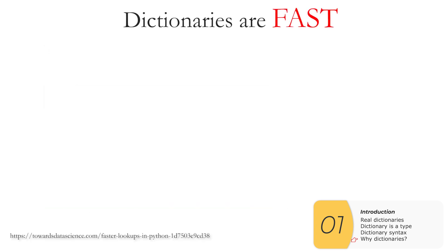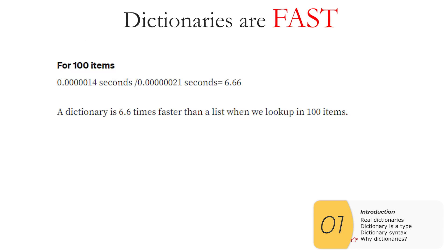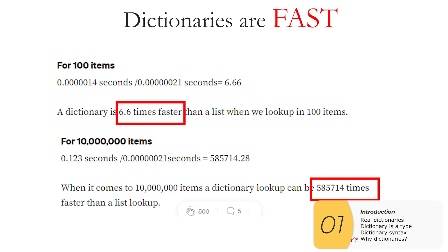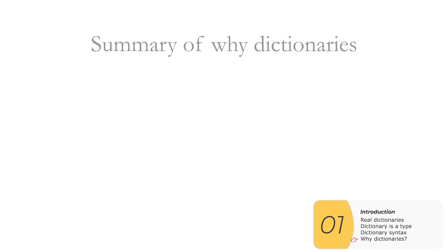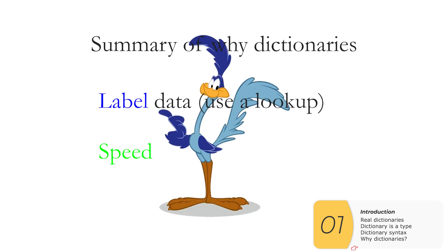The other reason to use dictionaries has to do with speed. I got this info from towardsdatascience.com — looking up items in a dictionary versus a list: for a hundred-item list, dictionaries are around six times faster, and for 10 million items, it's like 600,000 times faster. So the summary is: dictionaries help you label data making things easier to track, and they're significantly faster than lists.